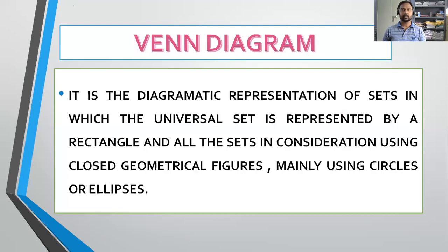Venn diagram — as the name indicates, it is about some diagram. It is a diagrammatic representation of sets in which the universal set, the superset of everything, is represented by a rectangle, and all the other sets in consideration are represented using closed geometrical figures. You can use any closed geometrical figure — it starts right from a triangle, any polygon — but mainly in Venn diagrams we use circles or ellipses.